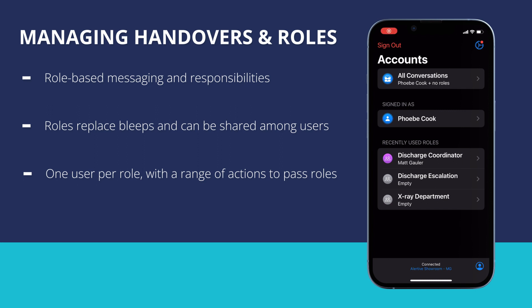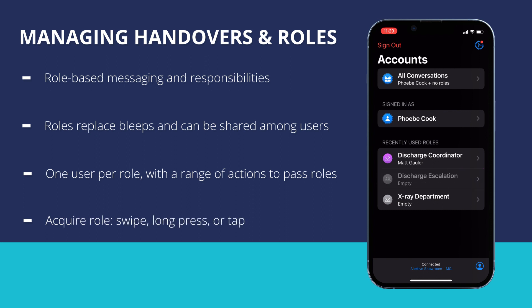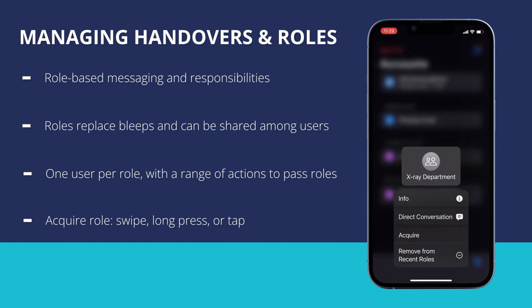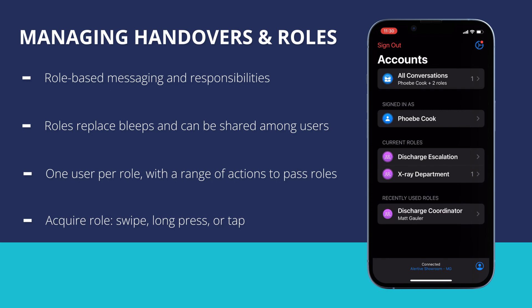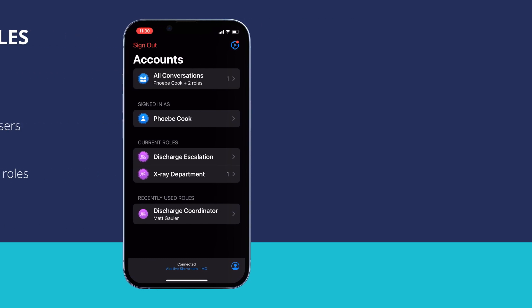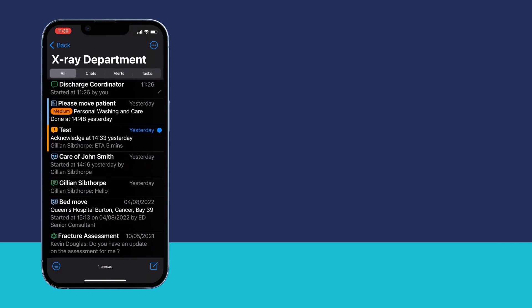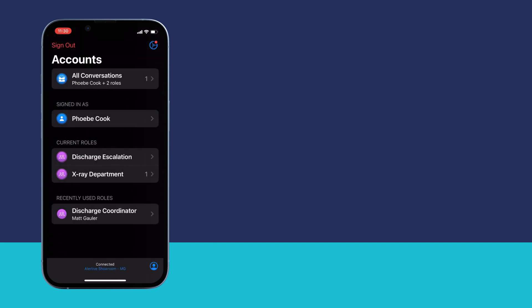In order to occupy or acquire a role, go to your account screen and swipe from right to left on the selected role you wish to acquire. You can also long press on the role name, or tap on the role to view the contact card and click acquire. Doing any of these actions will result in you occupying the role and having access to the inbox by clicking on the role. You will now be able to send conversations from this role rather than your user account.